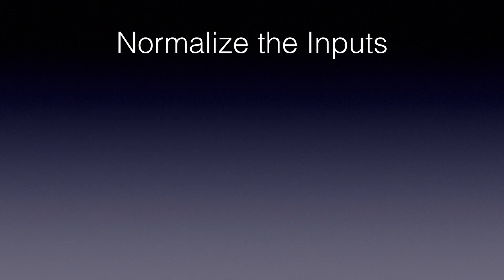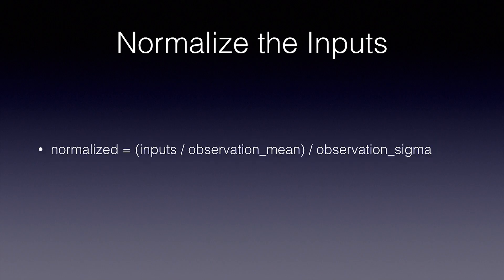This algorithm works best if all of our inputs are squeezed between zero and one. This is called normalizing, and we'll do this with a standard normalization algorithm. So the normalized inputs equal the inputs minus the observation mean divided by observation sigma.